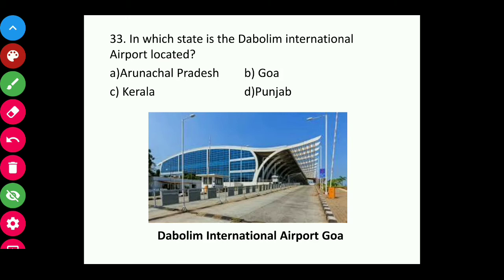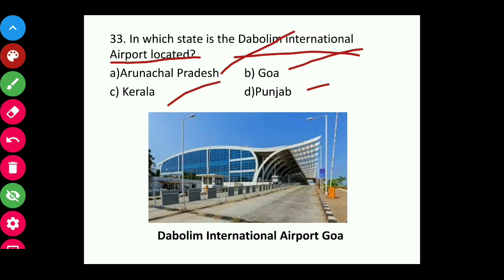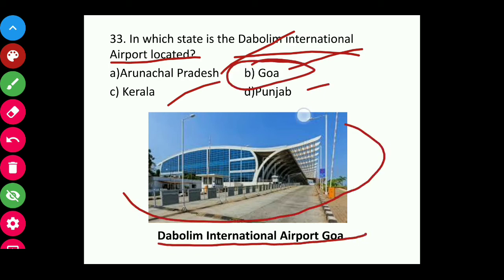Question thirty-three: In which state is Dabolim International Airport located — Arunachal Pradesh, Goa, Kerala, or Punjab? The answer is Goa. This is the Dabolim International Airport.